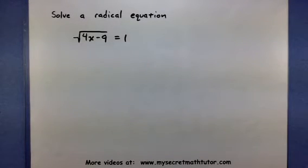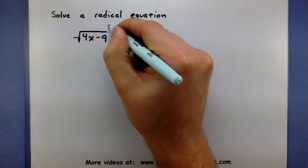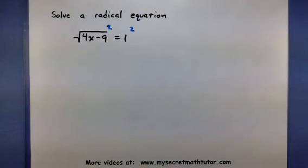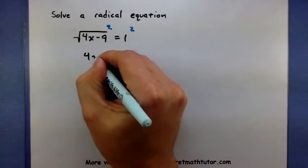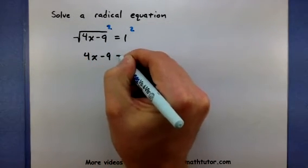So in order to get rid of it, I'm going to square both sides of my equation to get rid of that square root. Now this will give me 4x minus 9 is equal to 1.